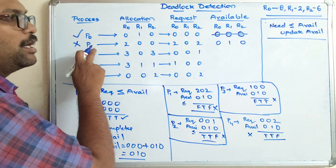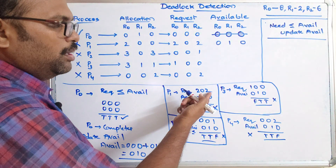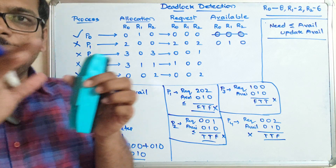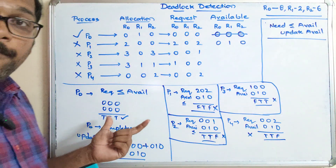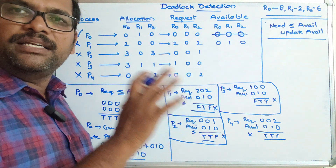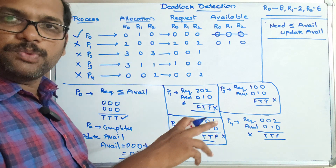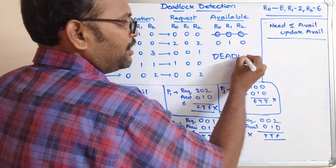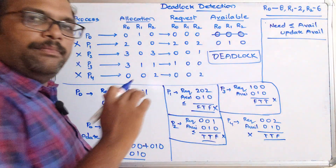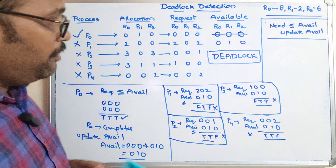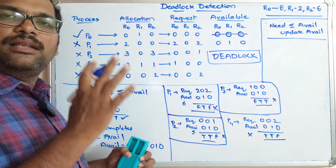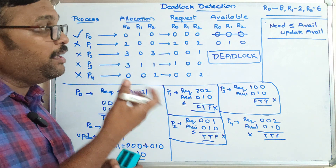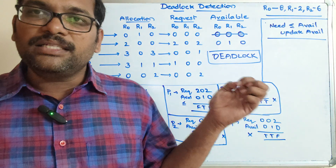Going back to P1 again: P1 still requires 2,0,2 but we only have 0,1,0 — not possible. So other than P0, all remaining processes are in a deadlock situation. With the available resources, no other process can complete its execution. Therefore, we can conclude there is a deadlock.